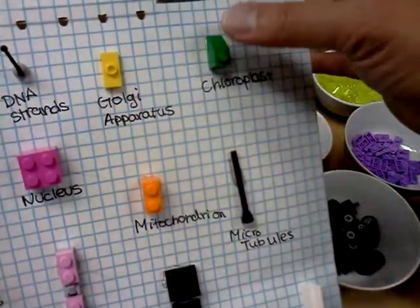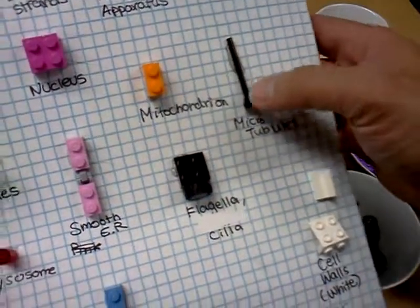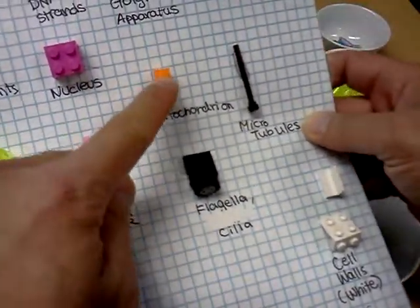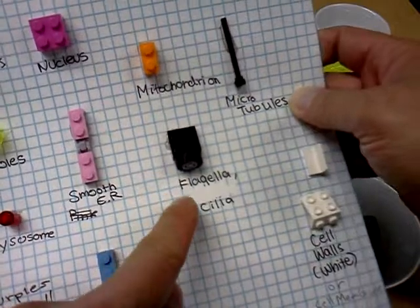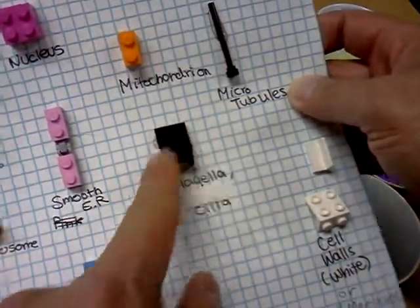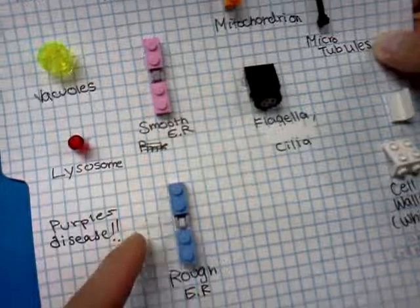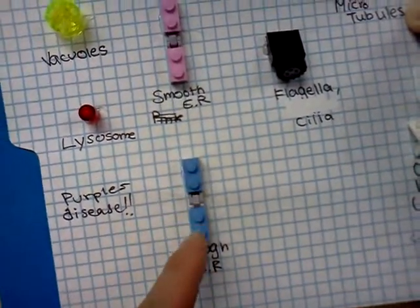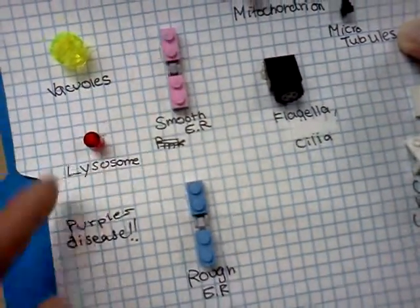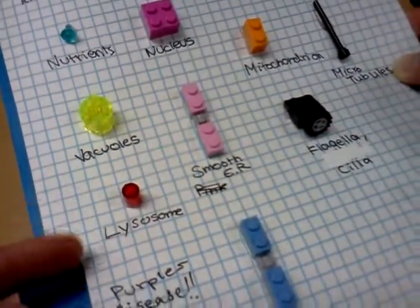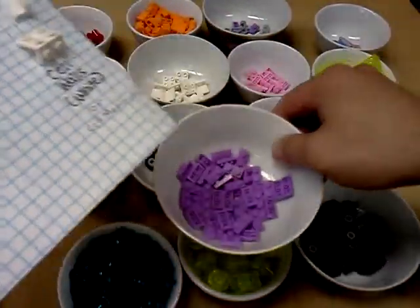If it's a plant cell, it has to have chloroplasts. We got microtubules for the structure of the cell, mitochondria for the energy packets. Flagella and cilia is movement only for animal cells. We got smooth ER and rough endoplasmic reticulum — because boys are rough and girls are smooth is what I like to say. Lysosomes.